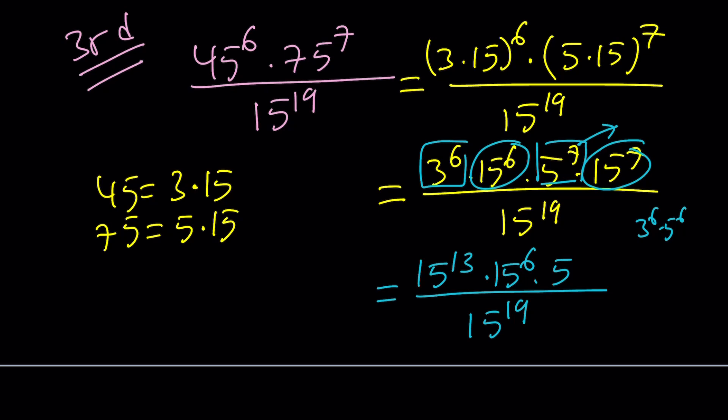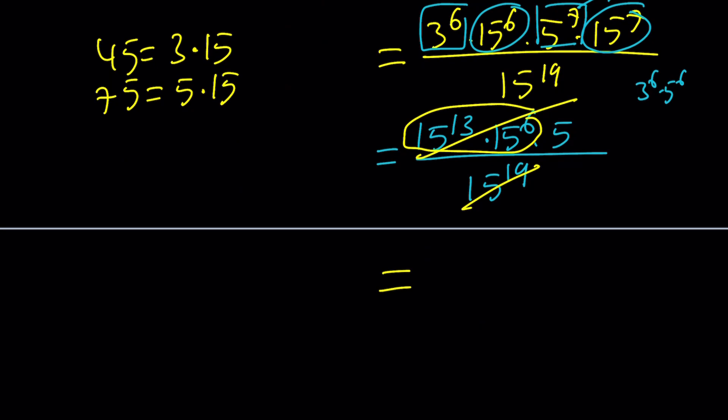Now when you multiply 15 to the power 13 and 15 to the power 6, you're going to add the exponents and that's going to be the same thing as 15 to the power 19. And the answer is going to be 5 again. And what was our original expression? 45 to the 6, 75 to the 7, and 15 to the power 19. And this simplifies as 5.